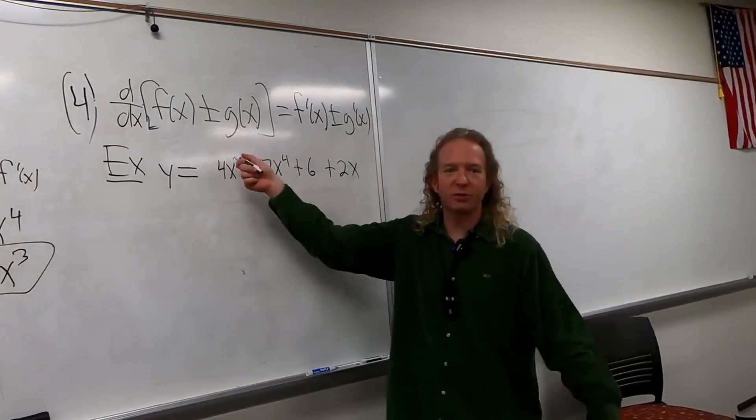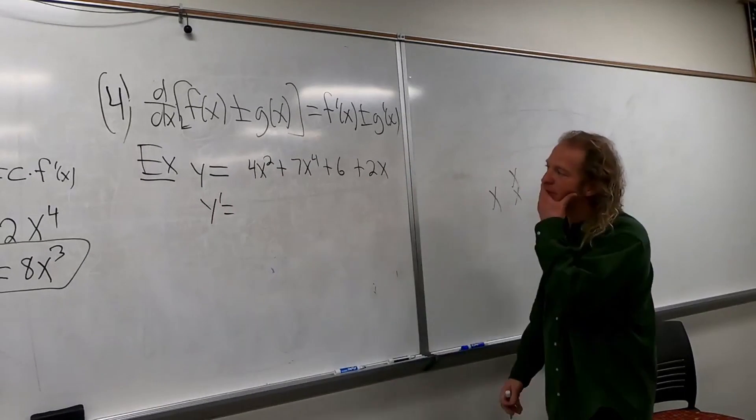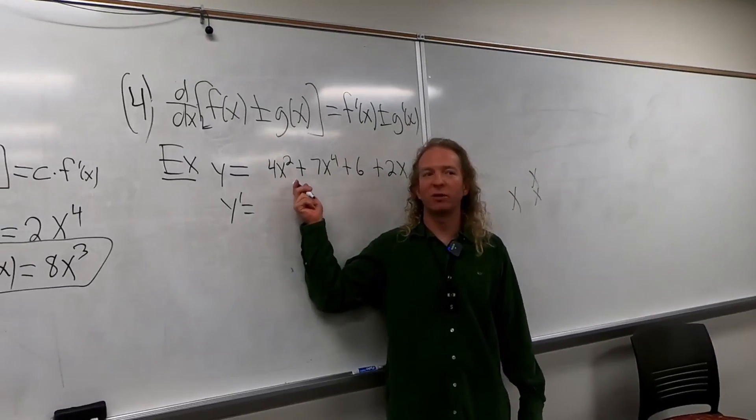So this formula says we just take the derivative of each piece. Right, so y prime. So what would the derivative of 4x squared be? Does anyone know?